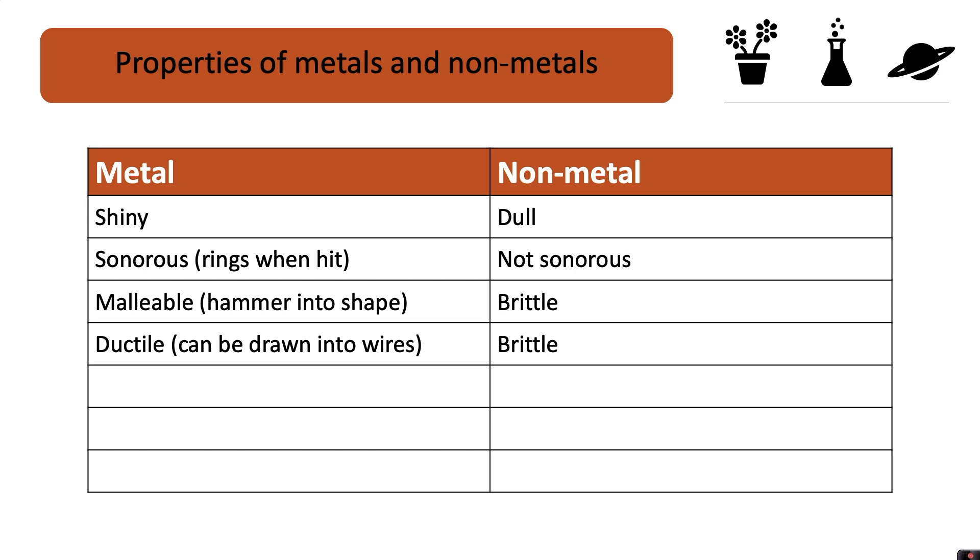Metals generally have a high density, whereas non-metals have a low density. Metals are good conductors of heat, whereas non-metals are not.